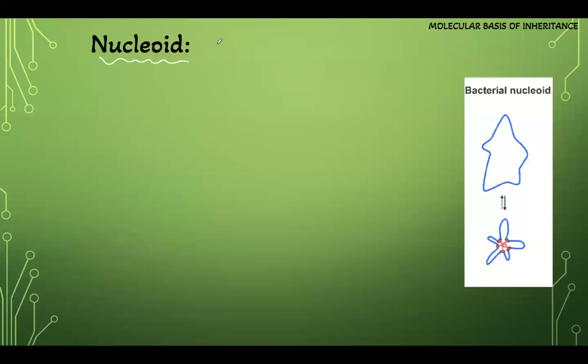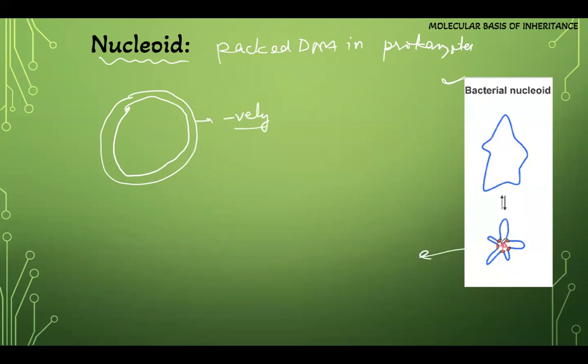So what is nucleoid? Nucleoid is the packed DNA in prokaryotes like bacteria. DNA in prokaryotes is circular DNA and it is quite large compared to the cell structure. DNA is a negatively charged molecule. There are some positively charged proteins - these red color structures given here, they are positively charged protein. These interact with the DNA helping in folding the DNA to make it smaller so that it can easily fit in a cell and stay in a particular area. When that packaging happens, we call it nucleoid.